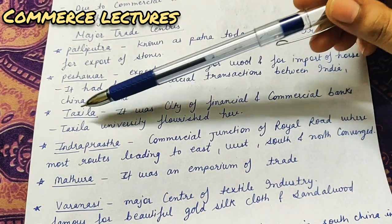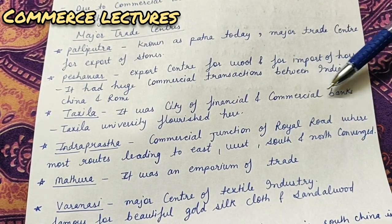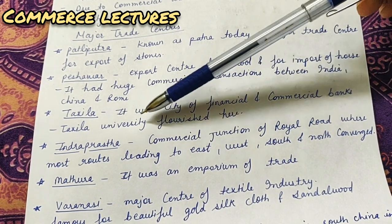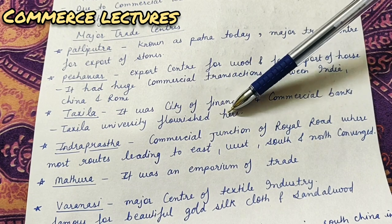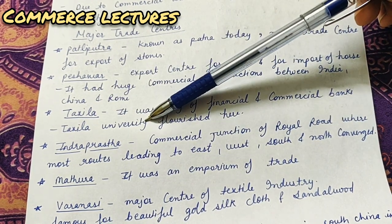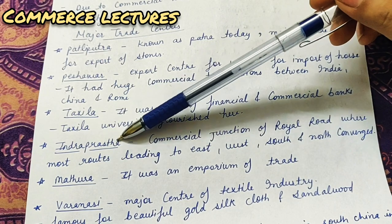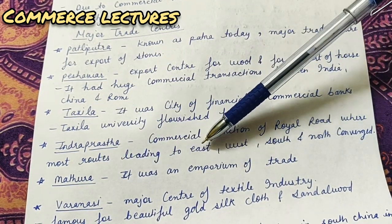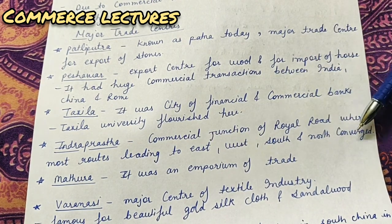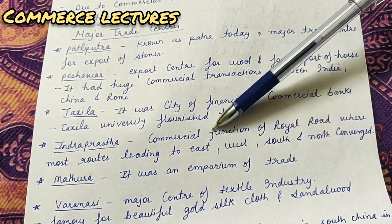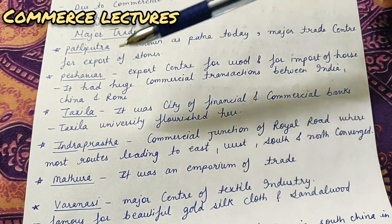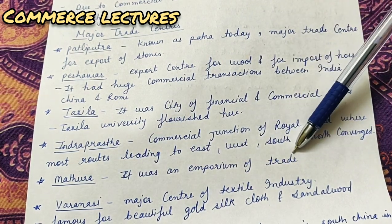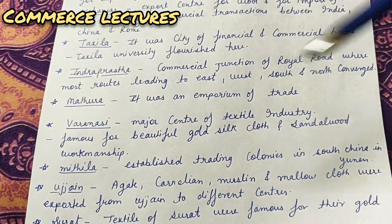Next is Taxila. It was the city of financial and commercial banks - there were many financial and commercial banks here. At this time there was also a very famous university - Taxila University. Next is Indraprastha - a commercial junction of royal roads where most routes leading to east, west, south, and north converged. Many routes met here going in all directions.